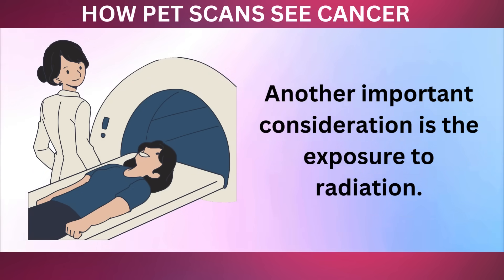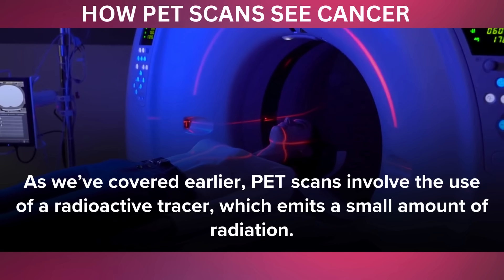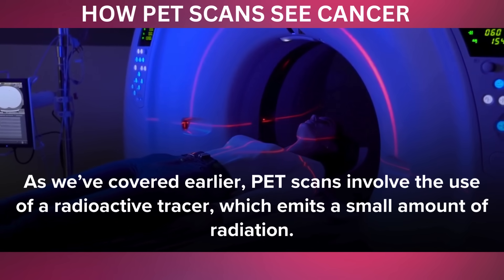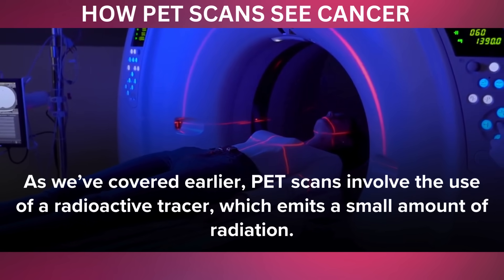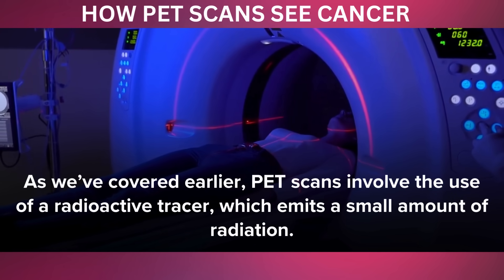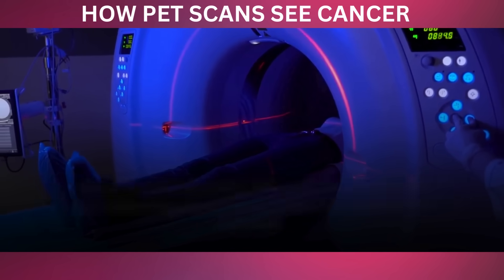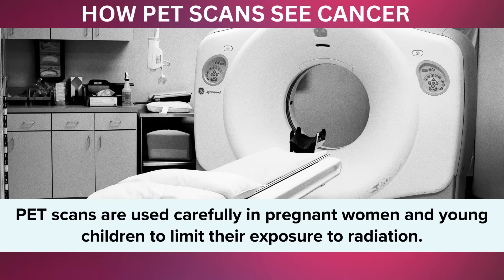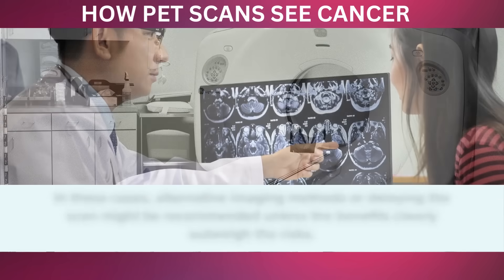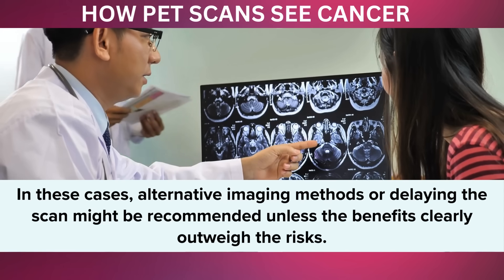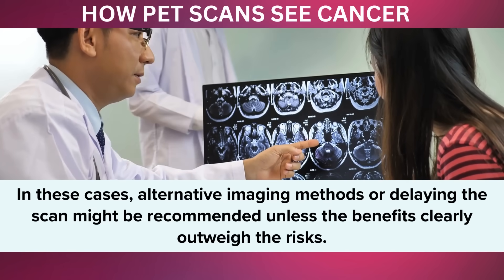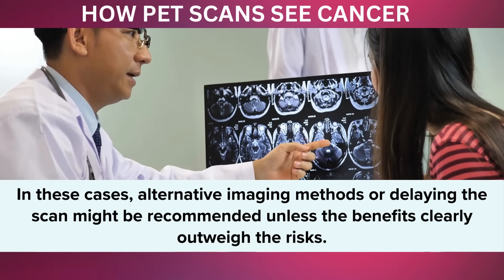Another important consideration is the exposure to radiation. PET scans involve the use of a radioactive tracer, which emits a small amount of radiation. While the risk is generally low, it is still a factor to consider, particularly for certain populations. For example, PET scans are used carefully in pregnant women and young children to limit their exposure to radiation. In these cases, alternative imaging methods, or delaying the scan, might be recommended unless the benefits clearly outweigh the risks.